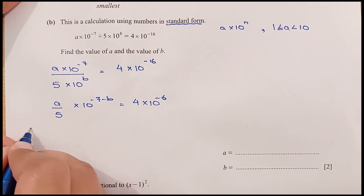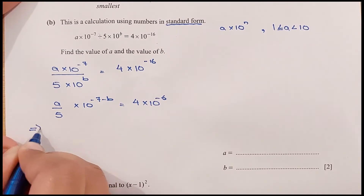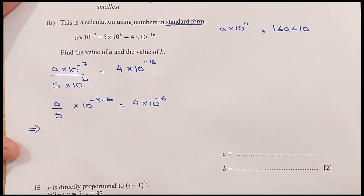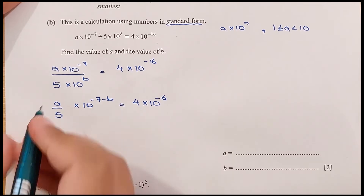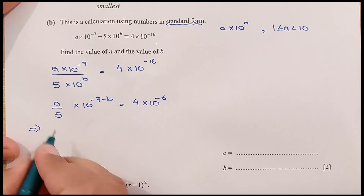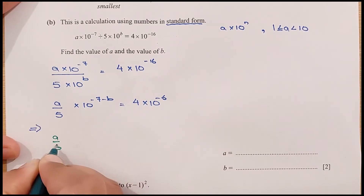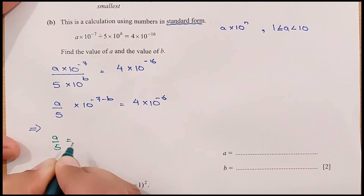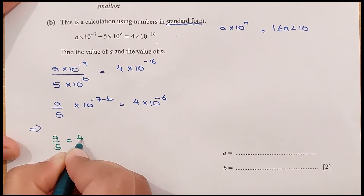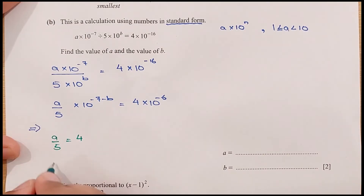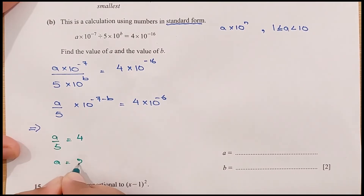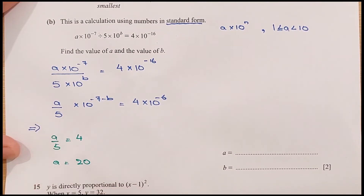Now we simplify. We get A over 5, times 10 exponent (minus 7 minus B), equals 4 times 10 exponent minus 16. Comparing, we get A over 5 equals 4, so A equals 4 times 5, which is 20.